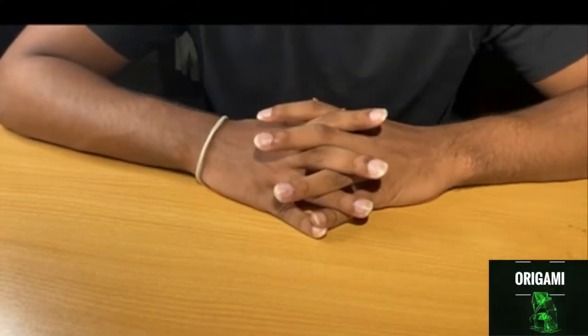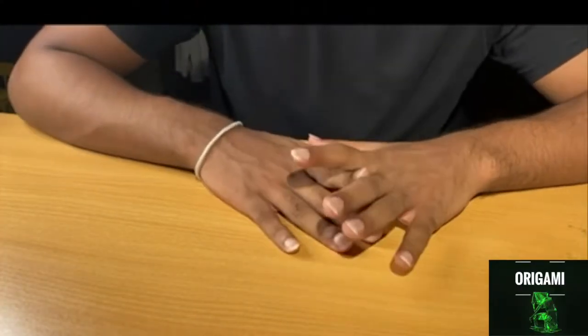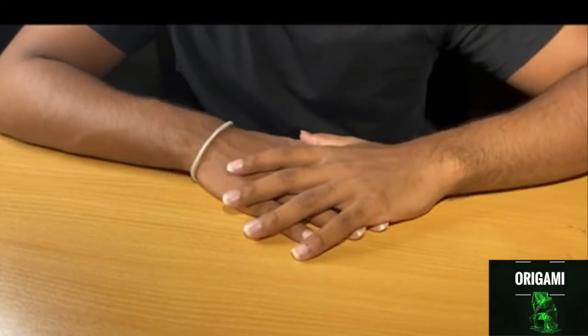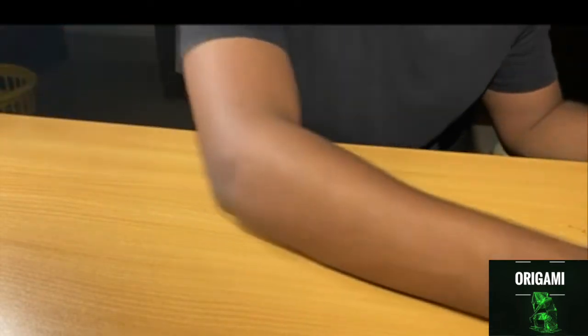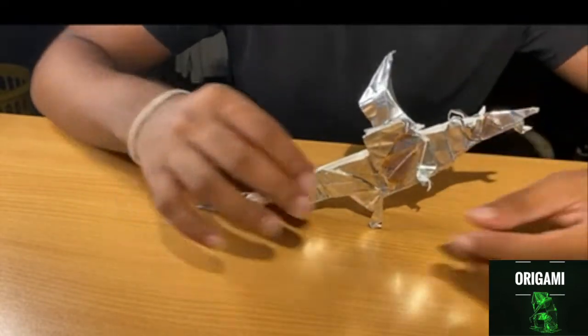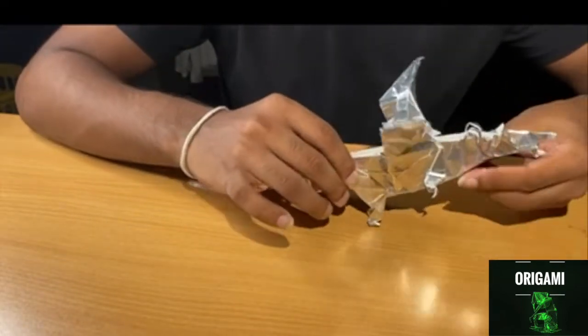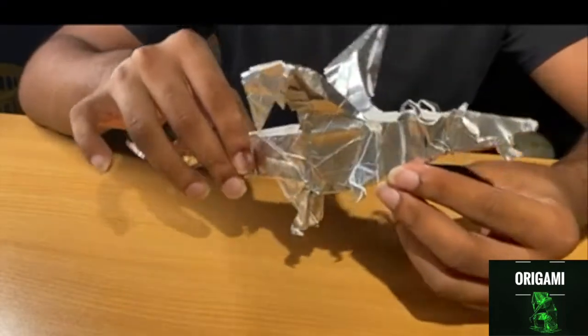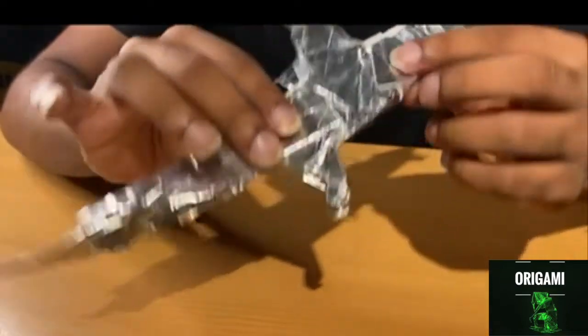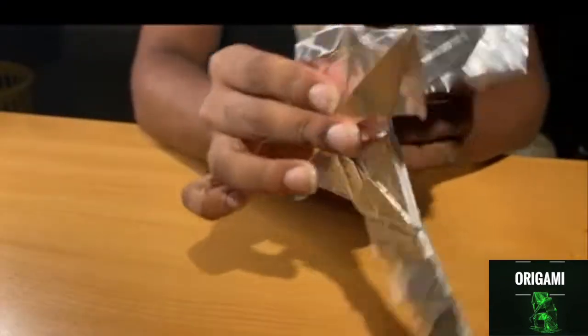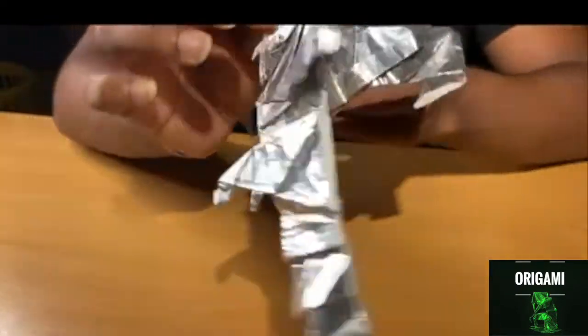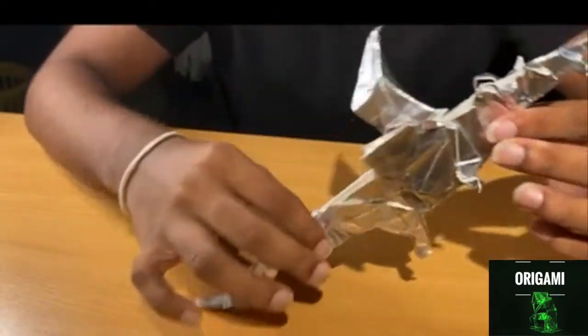Now we have the complex models which are even harder to fold and sometimes they require bigger paper. First off, we have the fury dragon. As you can see, the details in the wings. Let me show you a better view. These are the horns. It has the hind legs and small arms. Let me give you a better view of this.